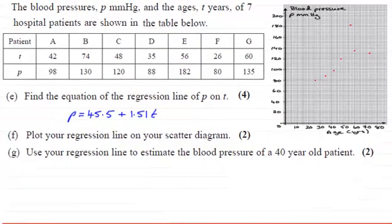Hi there. Now for this last part, or should I say the last two parts here, we've got to plot the regression line that we calculated in part E for this data. It was P equals 45.5 plus 1.51T. We've got to plot this regression line on the scatter diagram for two marks, and then use your regression line to estimate the blood pressure of a 40-year-old patient for two marks.